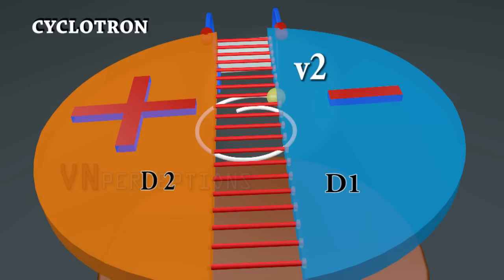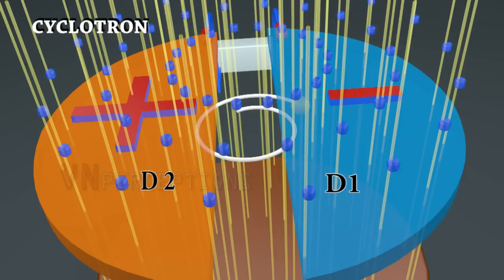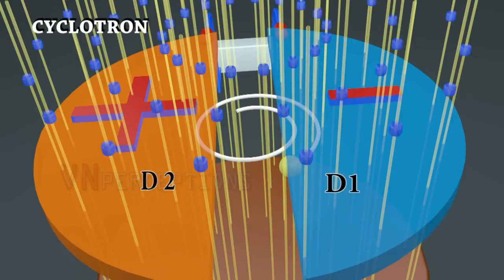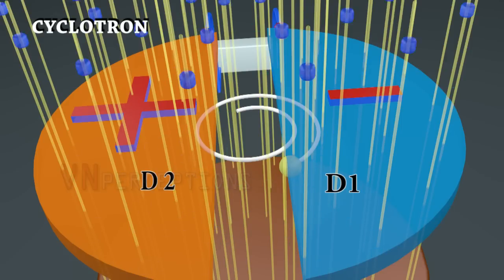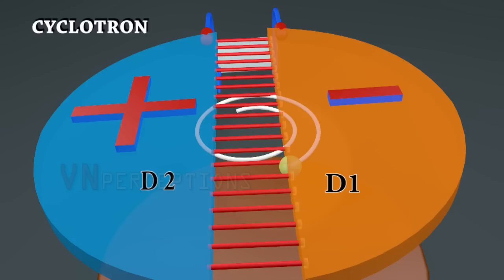When it enters D1 again the velocity would remain constant because the magnetic field cannot change the velocity. But the particle would make a greater semicircle because it is coming inside the D with a greater velocity. When it comes out of D it comes under the influence of electric field. Once again the electric field accelerates the charged particle and now the velocity becomes V3.